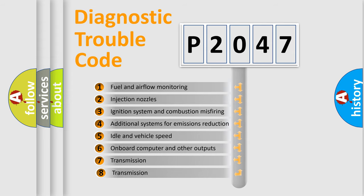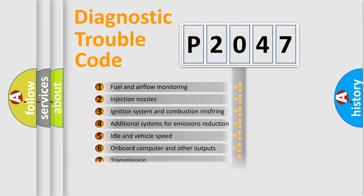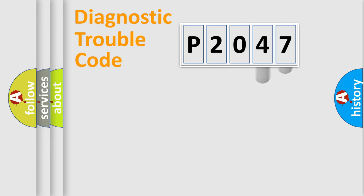The third character specifies a subset of errors. The distribution shown is valid only for the standardized DTC code. Only the last two characters define the specific fault of the group.